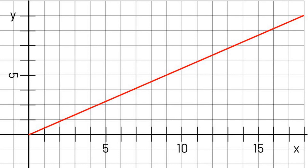Here we have a position time graph. On the x-axis is our time, and on the y-axis is where we put our position. Here is a line that makes up the position time graph. As the time changes, the position changes. So at five seconds, the object has traveled a little over two meters — let's say about 2.1 meters or so.